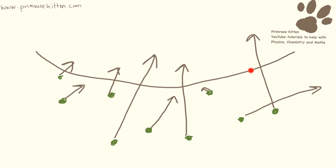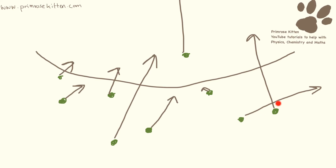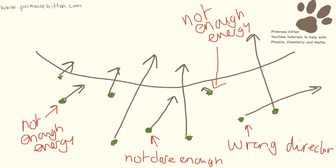If this is our surface, every so often a particle is going to get enough energy to escape the surface. Some of these particles might have enough energy, but they might just be going in the wrong direction. So loads of different particles are going to have loads of different reasons for not escaping — wrong direction, enough energy but not close enough to the surface, or not enough energy.